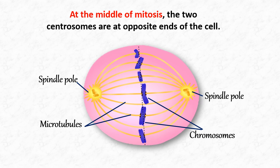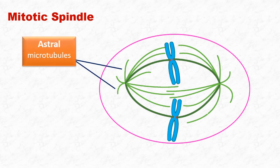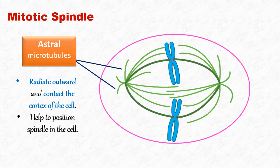Microtubules radiate outward from centrosomes in all directions. These microtubules forming the structure of mitotic spindle are further of three main types. The first type of microtubules is known as astral microtubules. Astral microtubules radiate outward from each spindle pole and contact the outer side or cortex of the cell. These microtubules help to position the spindle in the cell.